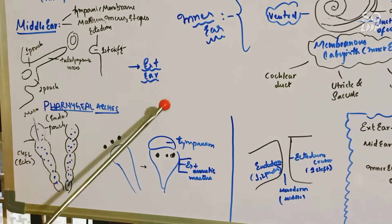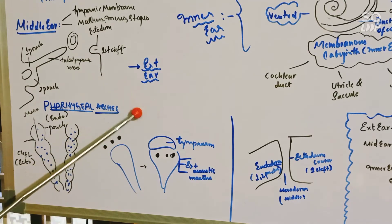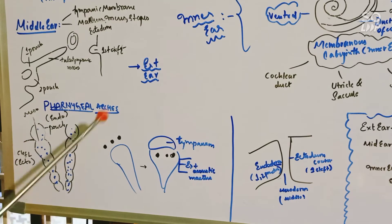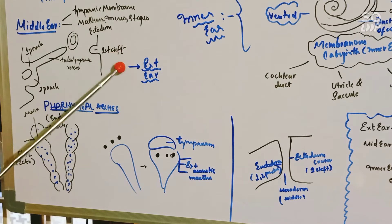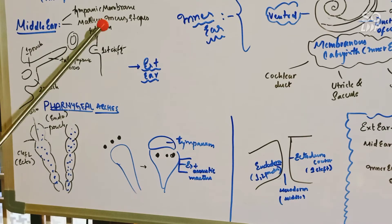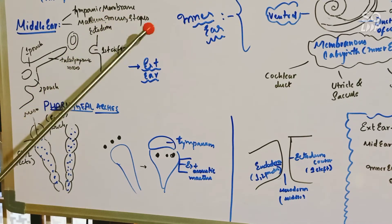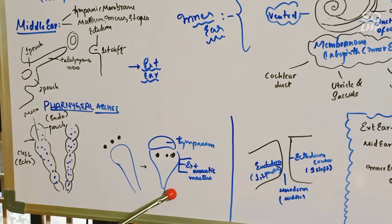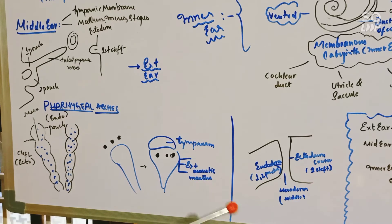Now let us learn about the external ear. The external ear is formed by the first cleft, which is also a structure of the pharyngeal arches. The first cleft is of ectodermal origin. So the external ear is of ectodermal origin. The malleus, incus, and stapes are at first individual. Later, they fuse with the tympanum. And it also fuses with the external acoustic meatus, that is, the external ear.